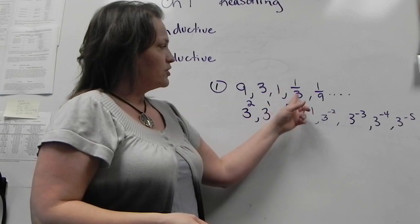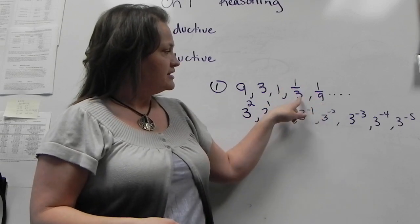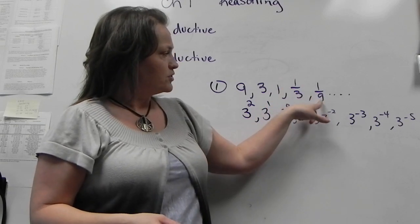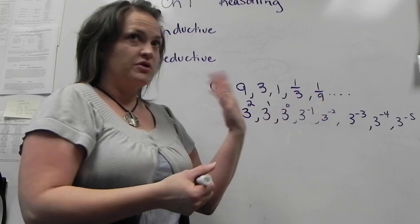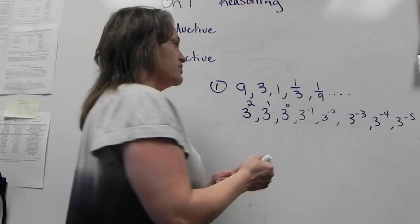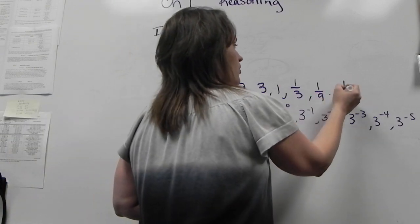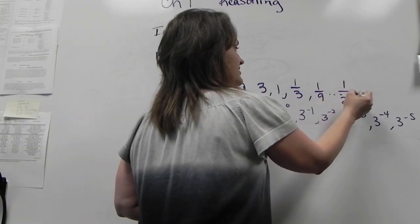So 1/3, then down to 1/9. We're expecting this is 3 to the first, that's 3 to the second, and the next one would be 1 over 3 to the third.